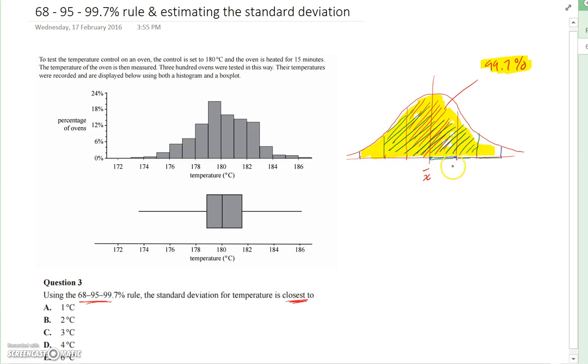you have it above the mean: one, two, three. So there's one, two, three standard deviations above the mean and three standard deviations below the mean as well.